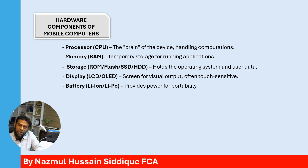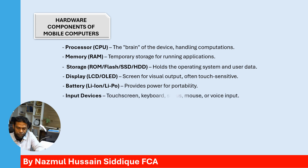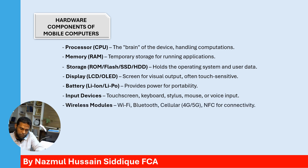Battery — Li-ion (lithium-ion) or LiPo (lithium polymer) — provides power for portability. Input devices like touch screen, keyboard, stylus, mouse or voice input. Wireless modules — usually Wi-Fi, Bluetooth, cellular 4G or 5G, and NFC for connectivity.